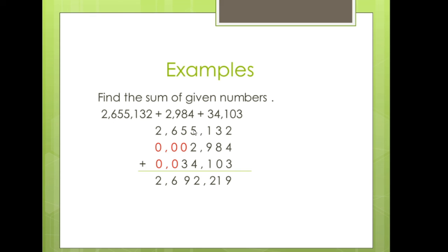One plus five is six, six plus two is eight, and eight plus four is twelve — again two will come over here and one will be over here as a carry. So one plus five is six, six plus three is nine. There is no carry, so this six will come as it is, and now this two will come as it is. So this would be the answer.